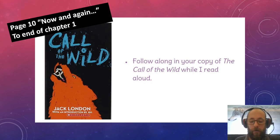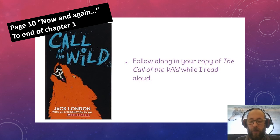As Curly and he looked at receding Seattle from the deck of the Narwhal, it was the last he saw of the warm Southland. Curly and he were taken below by Perrault and turned over to a black-faced giant called François. Perrault was a French Canadian and swarthy, but François was a French Canadian half-breed and twice as swarthy. They were a new kind of men to Buck, and while he developed no affection for them, he nonetheless grew honestly to respect them.